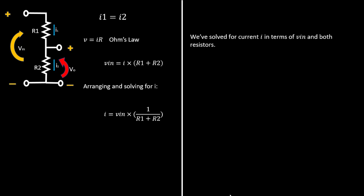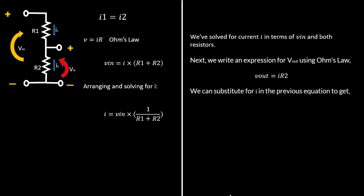Now that we have solved for I in terms of Vin and both resistors, we can write the expression for Vout using Ohm's law: Vout equals I times R2. Substituting the value of I, which is Vin divided by R1 plus R2, we end up with Vout equals Vin multiplied by R2 divided by R1 plus R2. That is how we derive the voltage divider formula.